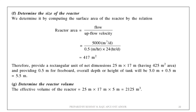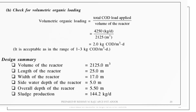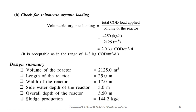A rectangular unit of net dimensions 25 m × 17 m is provided, giving an area of 425 m². With 0.5 m freeboard, total depth = 5.5 m. The effective volume of the reactor is then calculated. A check for volumetric organic loading: volumetric organic loading = total COD load applied ÷ volume of reactor = 2 kg COD/m³/day, which is within the acceptable range.